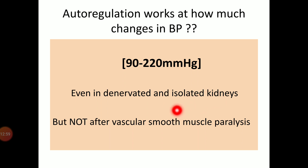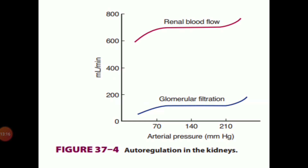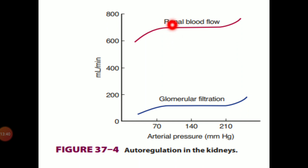The vascular smooth muscle of the vessels — the afferent arteriole and other arteries in the kidney — is very important for autoregulation to work. On the graph, the arterial pressure ranges from 70 to 220 mmHg. When arterial pressure increases from 90 to 220 mmHg, the glomerular filtration rate remains in a plateau at the same rate, and renal blood flow is also not increasing or decreasing — it stays at the same level. This relatively constant state occurs when arterial pressure is between 90 to 220 mmHg because of autoregulation.